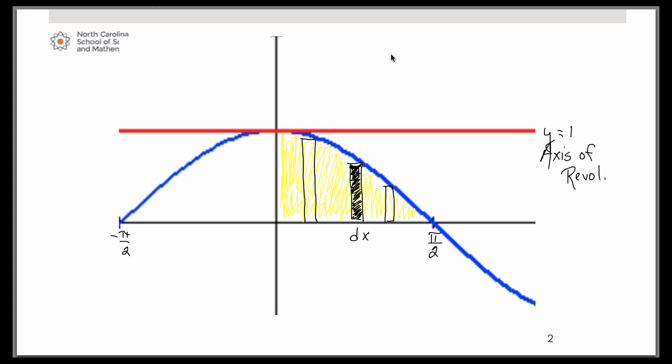Okay, so if you think of the formula that we're going to build our definite integral off of, it's going to be pi times big R squared minus little r squared. So big R is the distance from the axis of revolution at y equals one to the far side of your representative rectangle. So big R is going to be this distance here. So let's go ahead and get an expression to represent that. We'll use the idea of top minus bottom, so at the top we're hitting that horizontal line y equals one, at the bottom we're hitting the x-axis at zero. So big R simply is one.